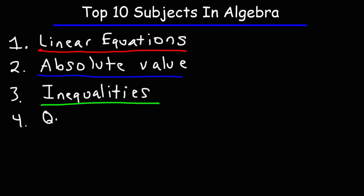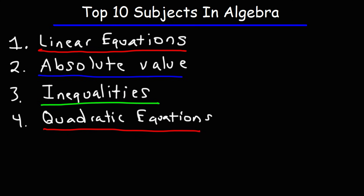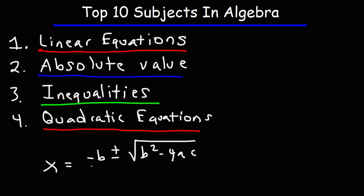Next we have quadratic equations, which is going to be a big chapter in algebra — you'll spend a lot of time on this topic. You need to know how to graph a quadratic equation and how to solve one, which you can do by completing the square, by factoring, or by using the quadratic formula: x equals negative b plus or minus the square root of b squared minus 4ac, all over 2a.